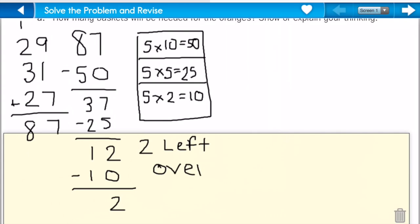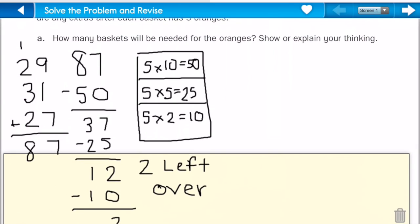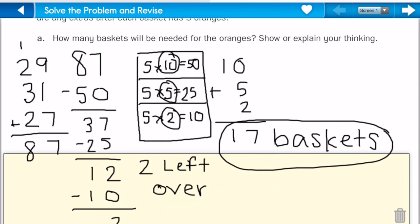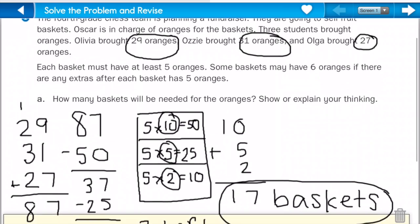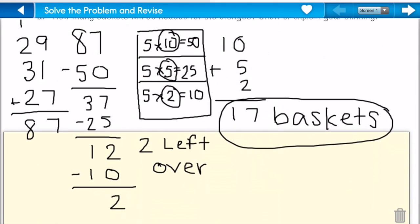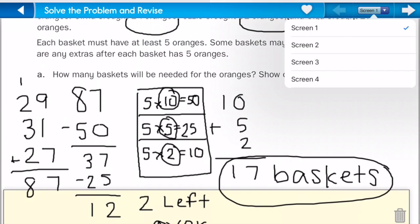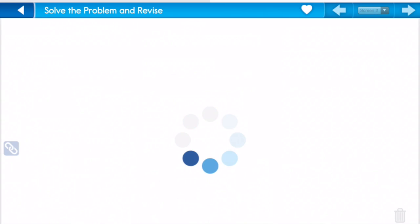I'm just going to write that down here. Now, I need to add up my numbers to see. So, I see here that 10 plus 5 plus 2 equals 7. I carry my 1. So, I get 17. So, I know that I'm going to need 17 baskets. 17 baskets. So, I know at least I need 17 baskets for the oranges with 2 left over. Now, let's go to the next screen and see what they're asking us.